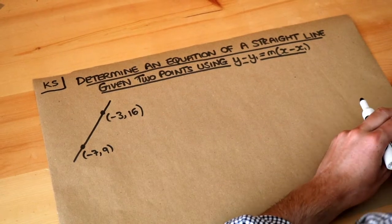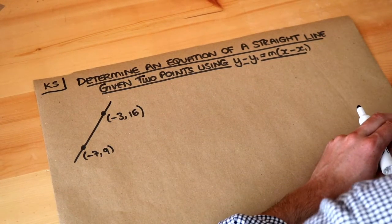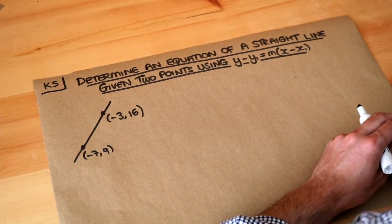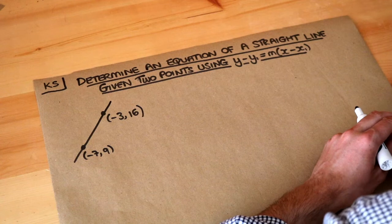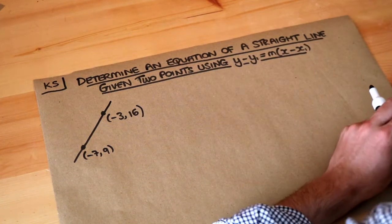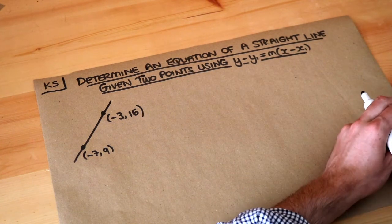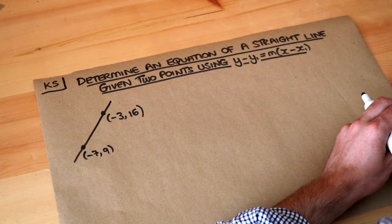Hello and welcome to this Dr. Ross-Math's key skill video on determining an equation of a straight line given two points, using the formula y minus y1 equals m brackets x minus x1.